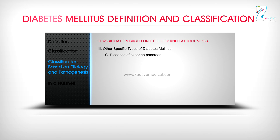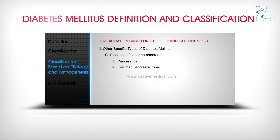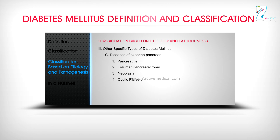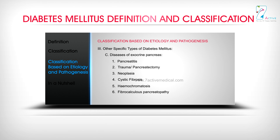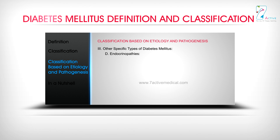C. Diseases of the exocrine pancreas: 1. Pancreatitis; 2. Trauma or pancreatectomy; 3. Neoplasia; 4. Cystic fibrosis; 5. Hemochromatosis; 6. Fibrocalculous pancreatopathy; 7. Others.